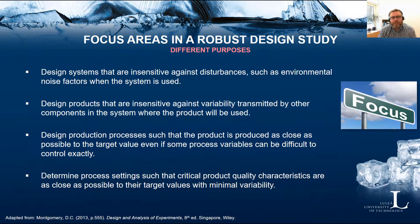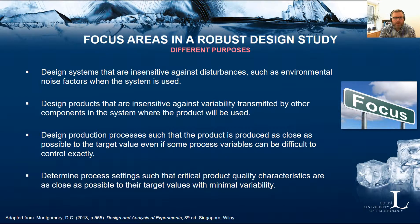Looking at different focus areas in robust design studies, we can try to design systems that are insensitive against disturbances such as environmental noise factors, or design products insensitive against variability transmitted from other components in the system. We can also design production processes so that the product is produced as close as possible to the target value even if some process variables are difficult to control exactly, and we can determine process settings such that critical quality characteristics are as close as possible to their targets with minimal variability.